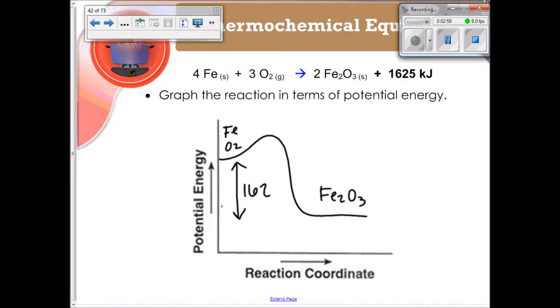This difference right here is this value, 1625 kilojoules. That is what we're actually losing when we go from the products down to the reactants. That is our potential energy that we are losing. So it shows you in both equation form and graph form that we have a loss in overall energy.